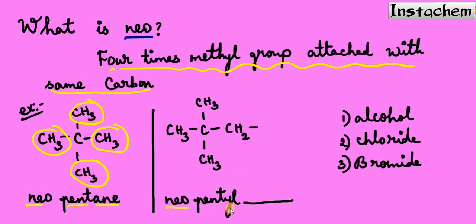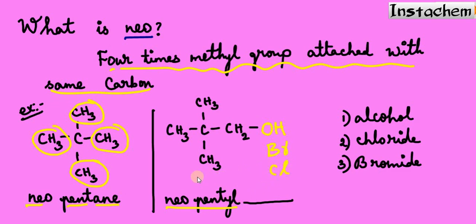When we replace one hydrogen with a hydroxyl group (OH), we get its derivative neopentyl alcohol. If we use a bromine group (Br), we call it neopentyl bromide; if we use chlorine (Cl), we call it neopentyl chloride — and so on. I hope you understand the meaning of normal, iso, and neo. Thanks for watching.